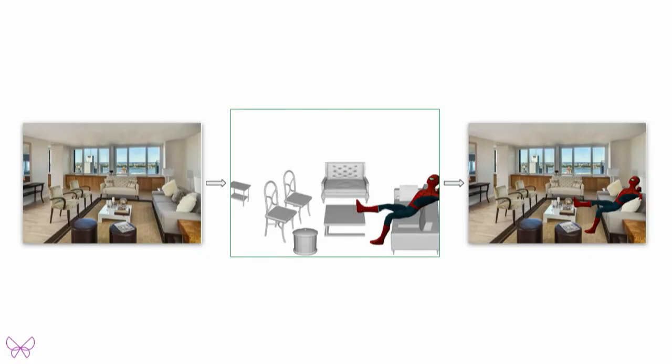Let me show you what I mean. Here, Selerio grabs the camera input and applies deep learning on it to create the digital representation of your living room. Now, Spider-Man knows where the sofa is, where the table is, and can make itself comfortable in your living room.